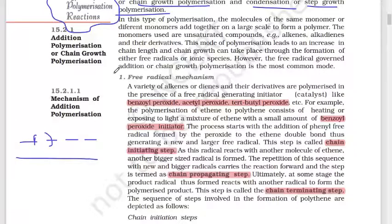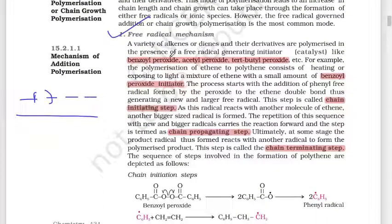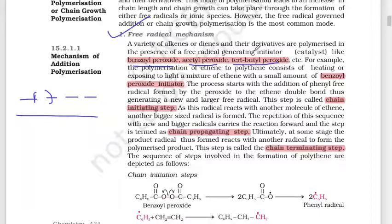We will follow the free radical mechanism. In the free radical mechanism, we use benzoyl peroxide, acetyl peroxide, or tributyl peroxide as catalysts or initiators. The steps are: chain initiation, chain propagation, and chain termination.